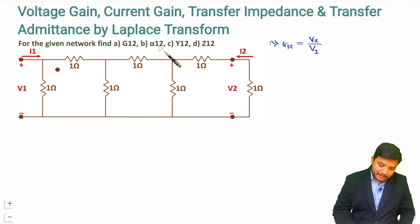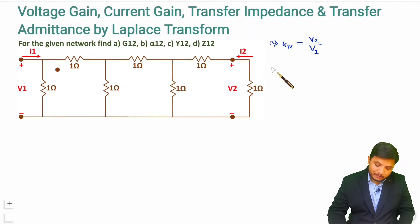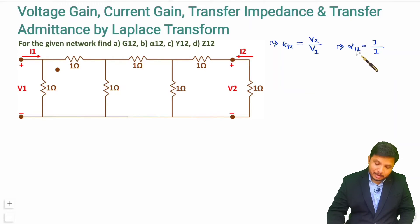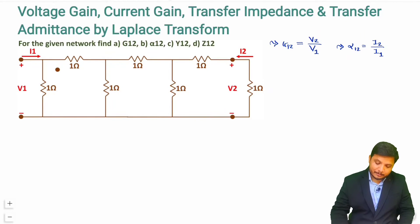Second is alpha12. Alpha12 is current gain — current divided by current. Alpha12 means I2 divided by I1.